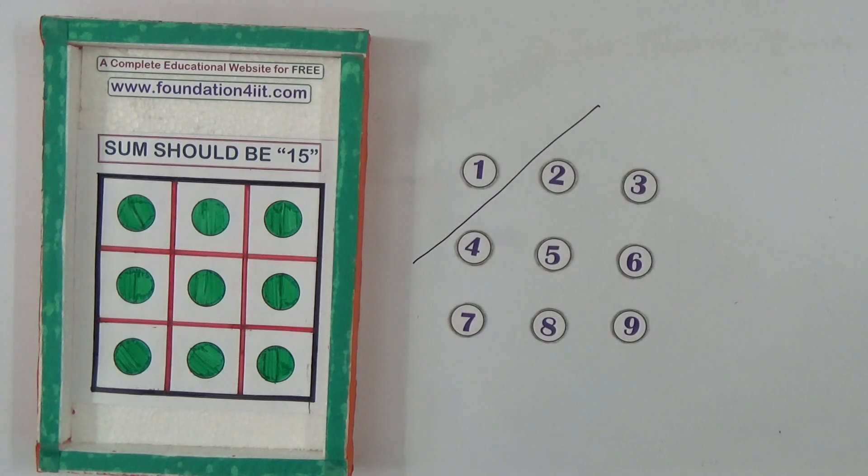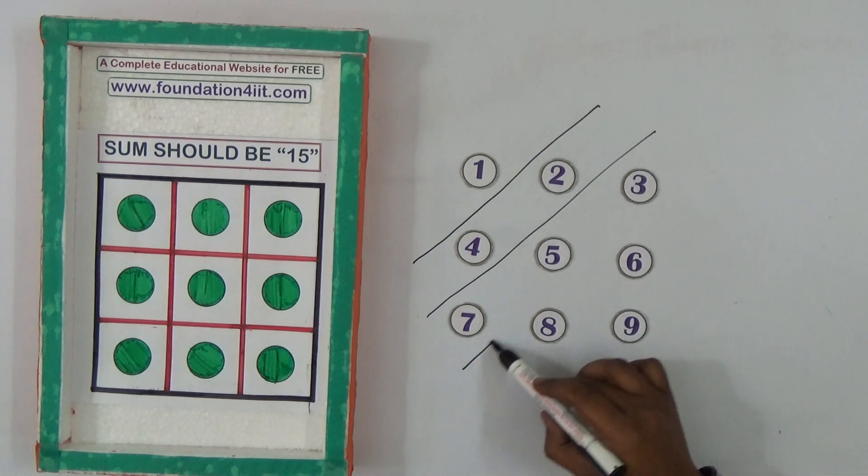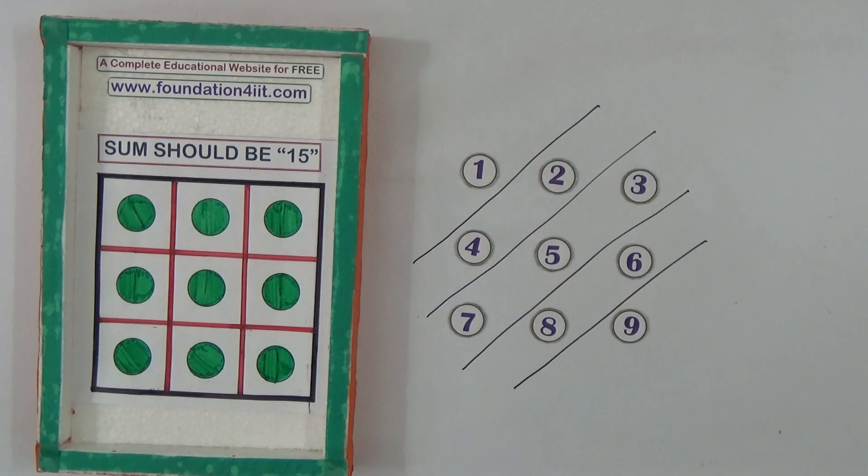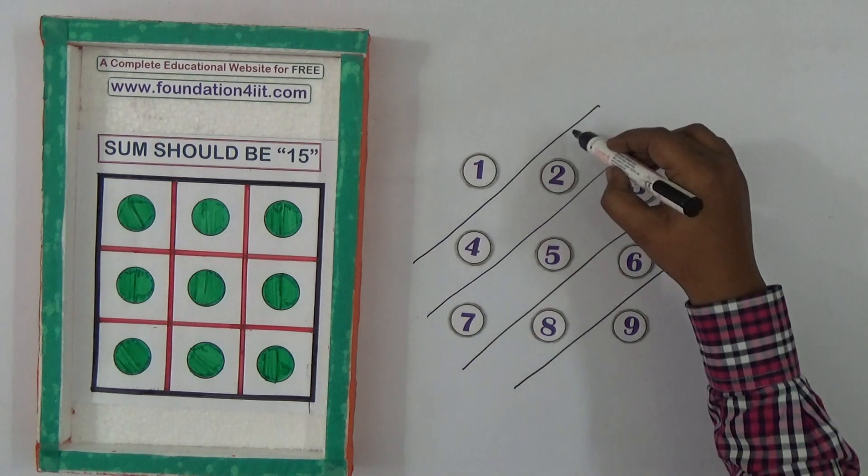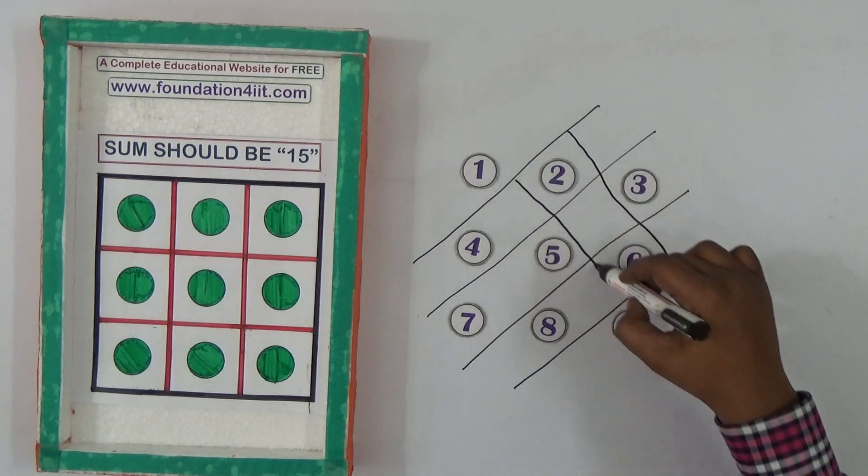Then take the pen or pencil. Cross, so diagonal wise I'm making line, you can observe. This is the first step and similarly you can make one more, join these gaps.